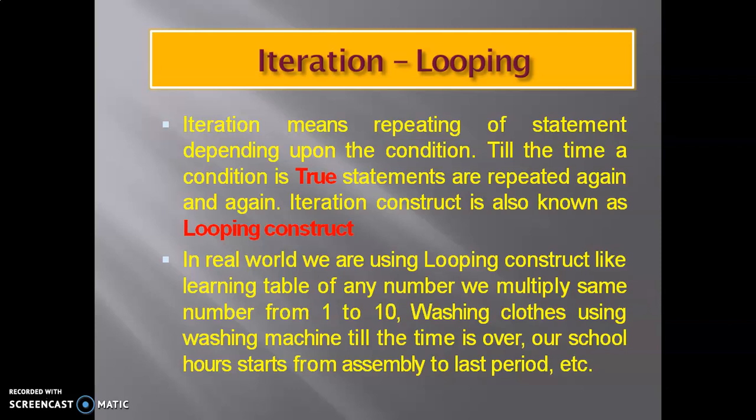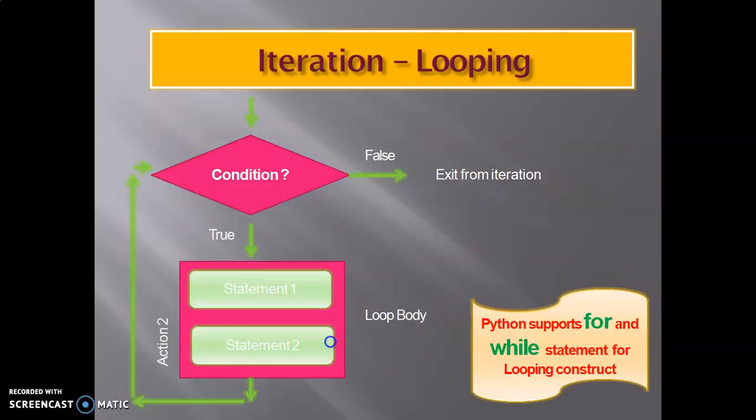Washing clothes in a washing machine till the time is over. Our school day starts from assembly to last period. These are examples of iteration and looping. This is the flowchart. Here we will give the conditions, then there will be the possible condition statements - true or false.